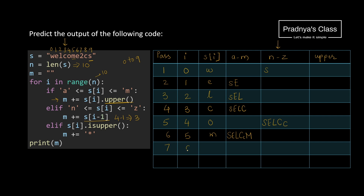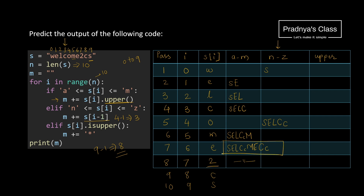In pass 6 i is 5 and the character is m — converted to capital M. In pass 7 i is 6 and the character is e — converted to capital E. After e we have digit 2; there is no criteria for digits in the code, so the string remains as is. The next letter is c, which gets converted to capital C. Finally we reach the last character s. The value of i is 9, so i minus 1 is 8. The character at index 8 is small c, so c gets concatenated. This is the final output string.